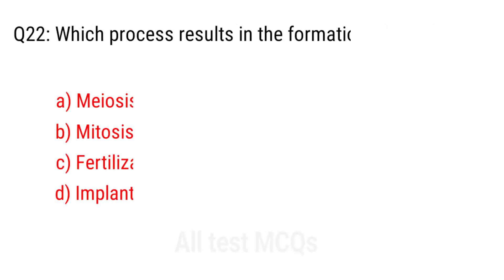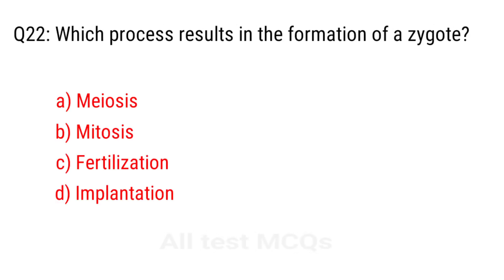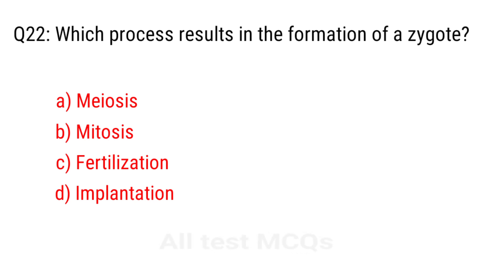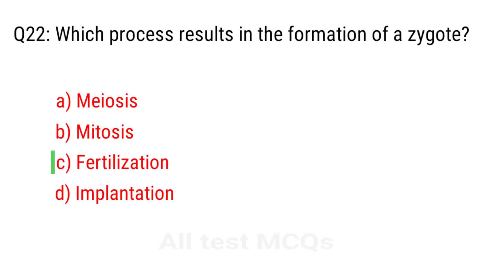Q22. Which process results in the formation of a zygote? The correct answer is option C: Fertilization.